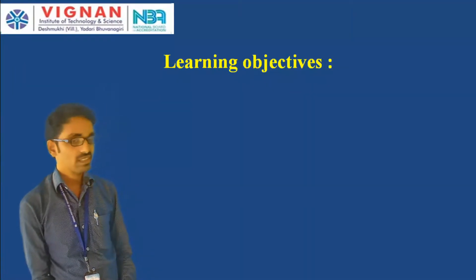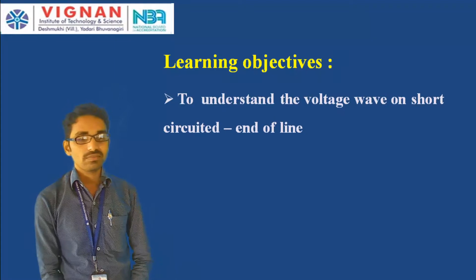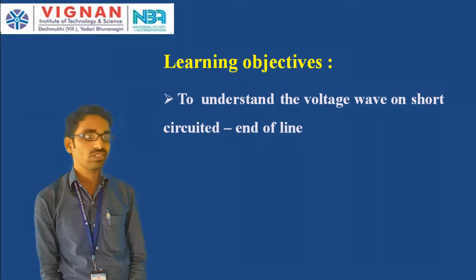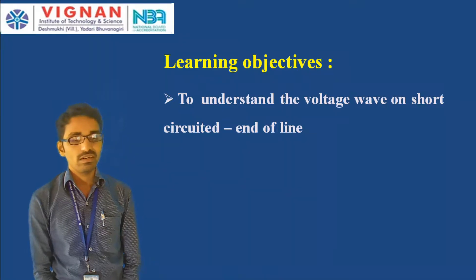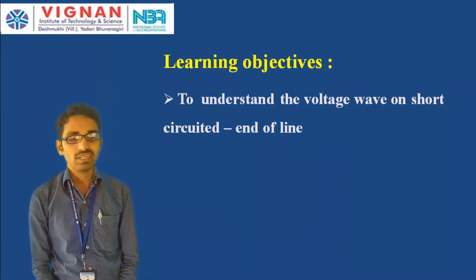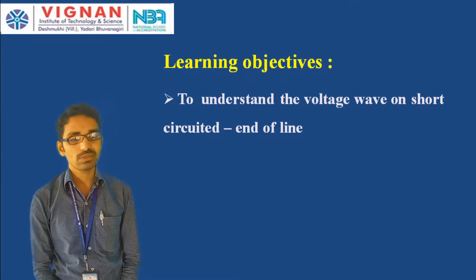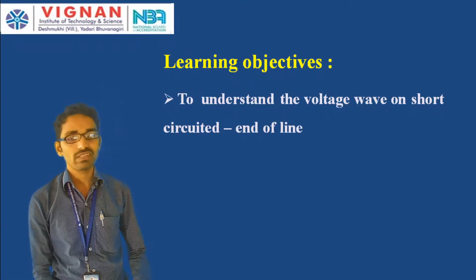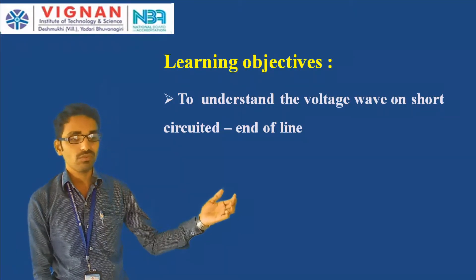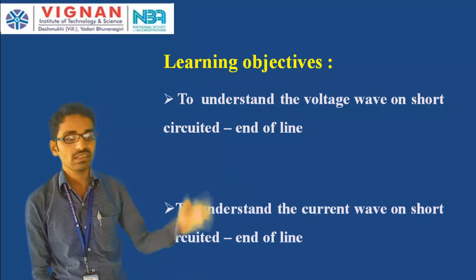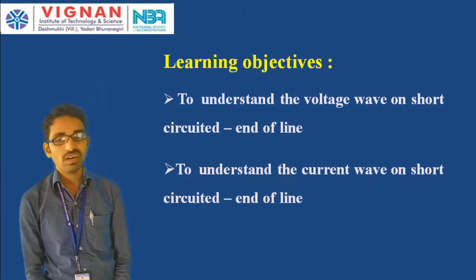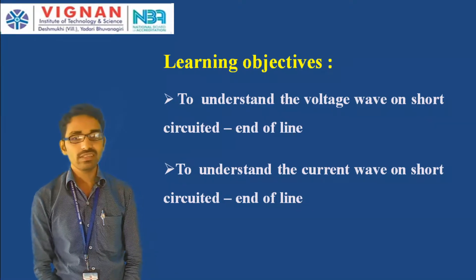The learning objectives of this lecture are: first, to understand the voltage wave on the short-circuited end of the line — when the receiving end is short-circuited, what is the behavior of the circuit for the voltage wave. The second objective is to understand the current wave on the short-circuited end of the line.